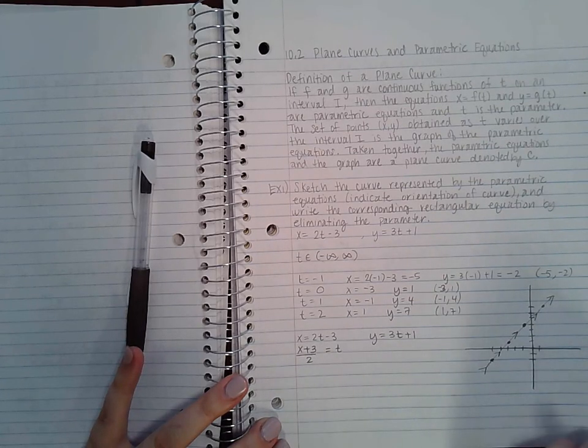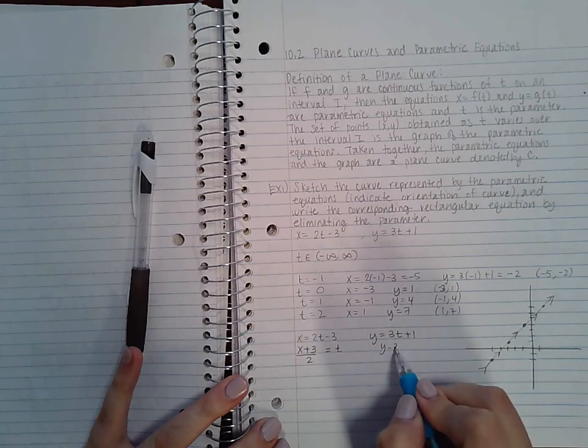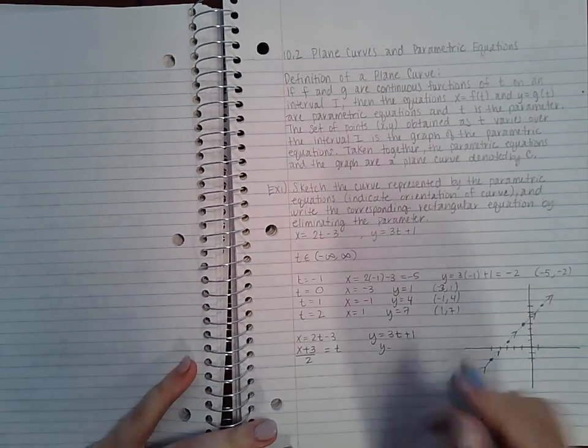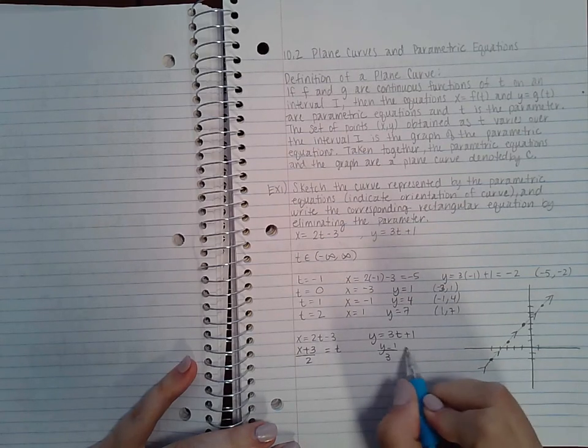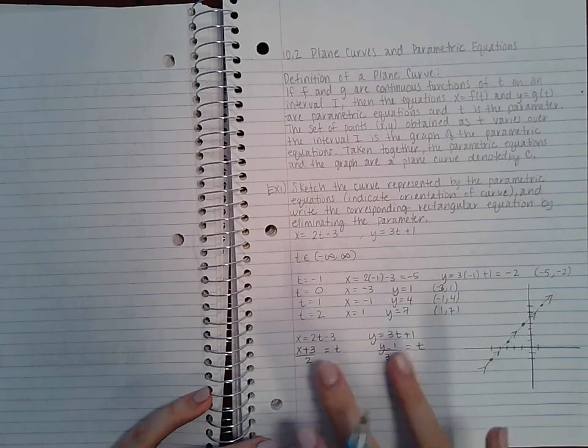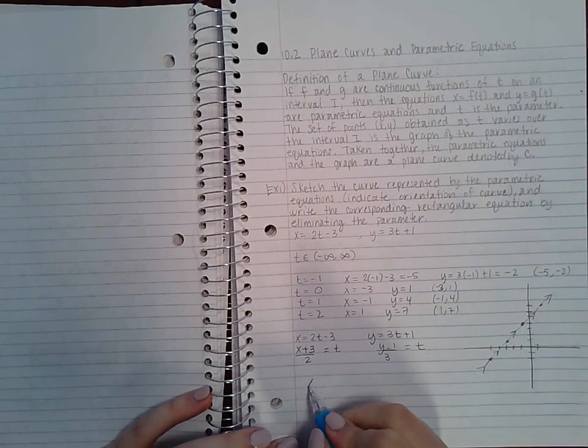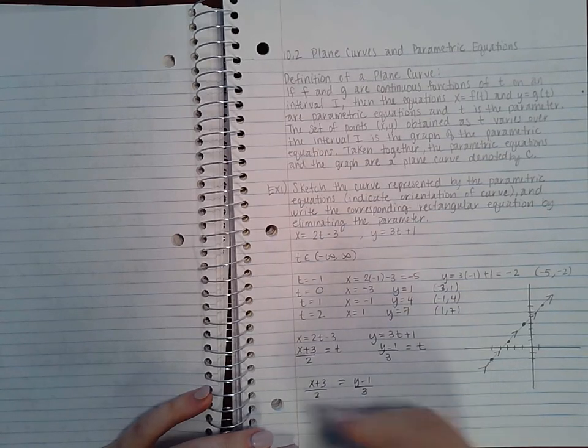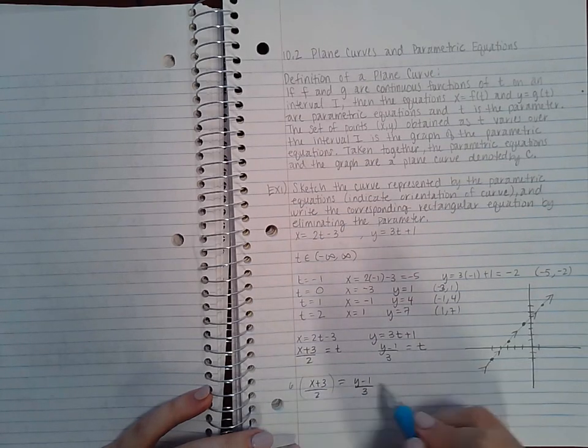I get t = (y - 1)/3. So since both of these are equivalent to t, they should be equivalent to each other. And if I multiply both sides by the common denominator,